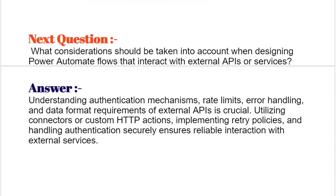Next question: What considerations should be taken into account when designing Power Automate flows that interact with external APIs or services? Understanding authentication mechanisms, rate limits, error handling, and data format requirements of external APIs is crucial. Utilizing connectors or custom HTTP actions, implementing retry policies, and handling authentication securely ensures reliable interaction with external services.